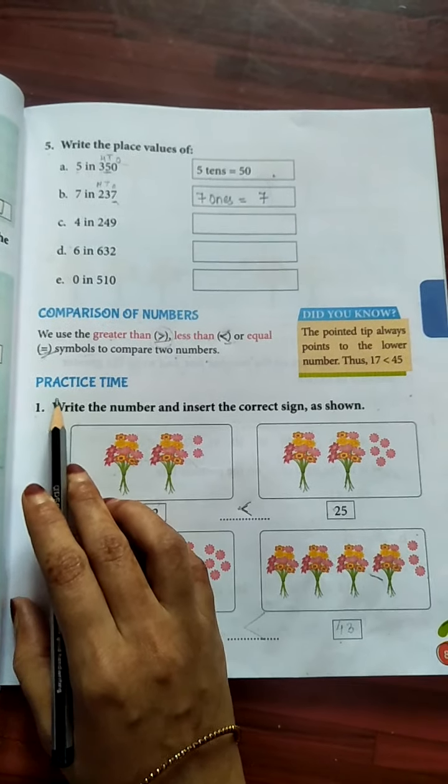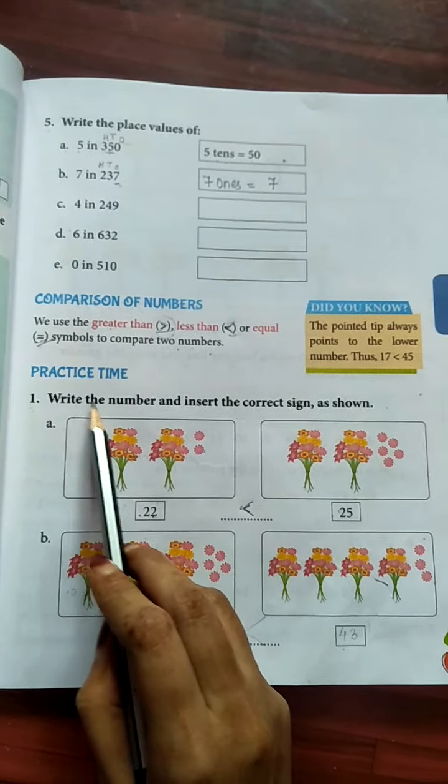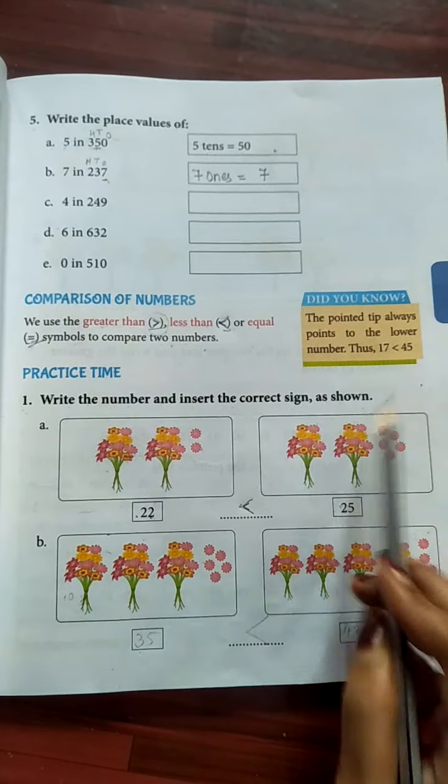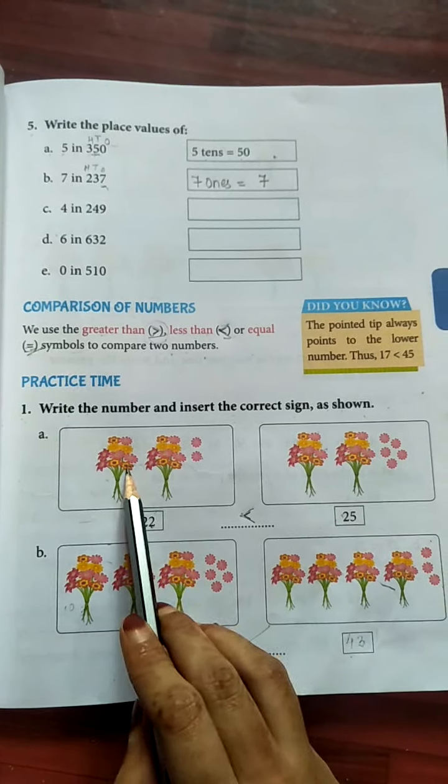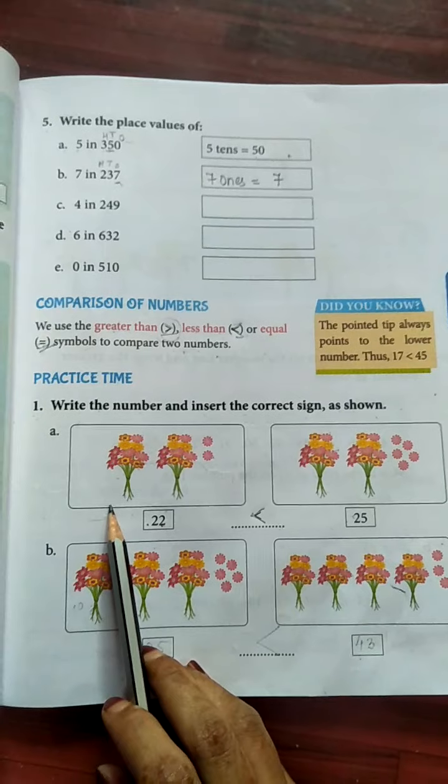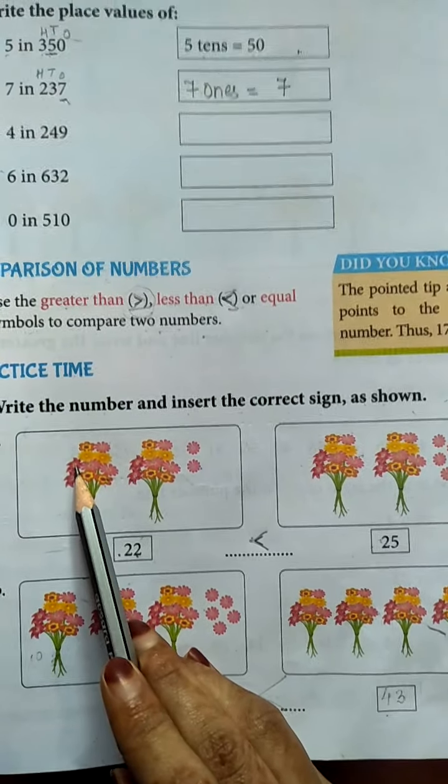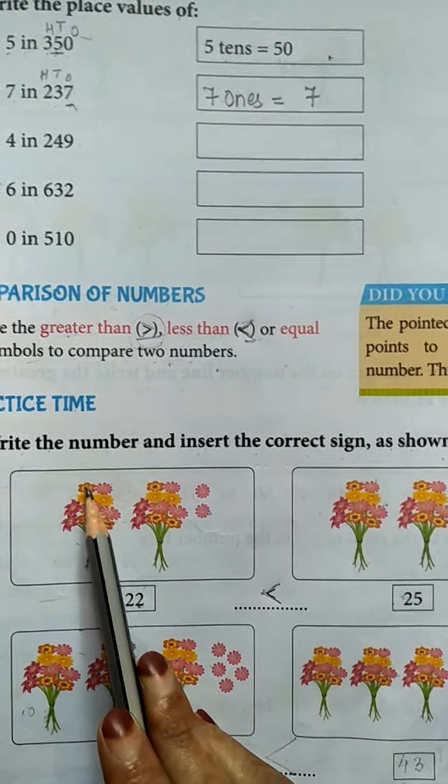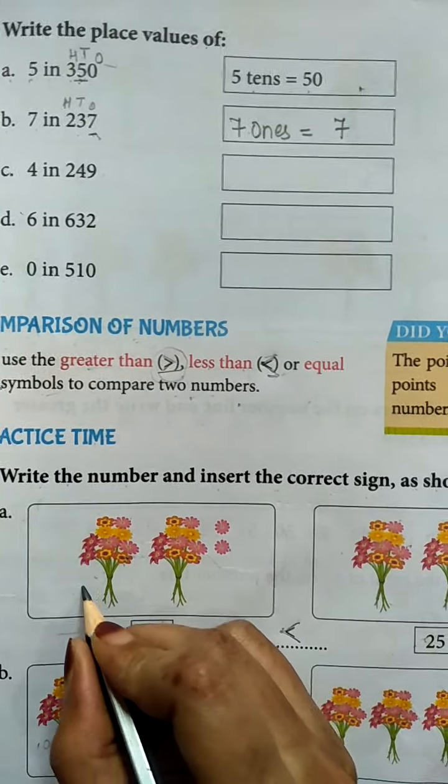Now see here practice time. First, write the number and insert the correct sign as shown. Now look at these two pictures and count the number of flowers. See here, count all flowers. 1, 2, 3, 4, 5, 6, 7, 8, 9, 10. This is the bundle of 10 flowers.